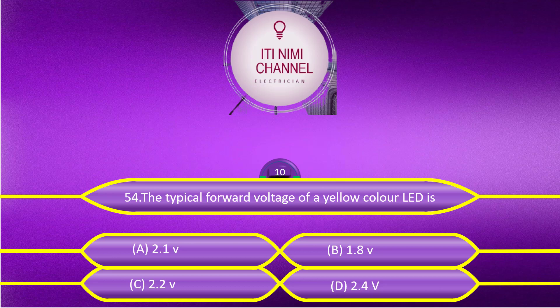The typical forward voltage of a yellow color LED is: Option A, 2.1 volt. Option B, 1.8 volt. Option C, 2.2 volt. Option D, 2.4 volt.